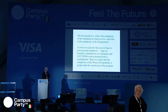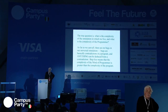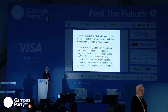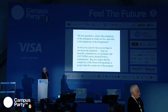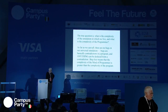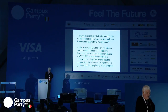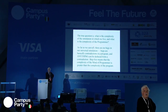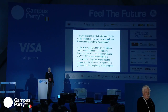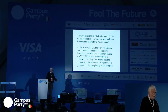The truly interesting question is not whether we are living in a simulation — we are — but what is the complexity of the simulation and the complexity of the programmer? As far as we can tell, there are no bugs in this universal simulation. Bugs are basically contradictions in a program, and anything can be deduced from a contradiction. Bug-free means the complexity of the programmer is greater than the complexity of the program. You know you can write bug-free programs of ten lines, but once you get to a thousand lines, a million lines, ten million lines — hopeless, because that's way beyond the complexity of our normal minds.